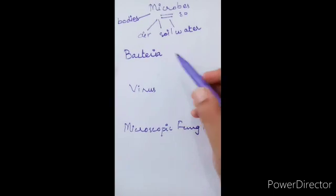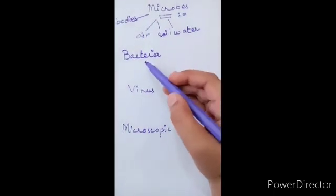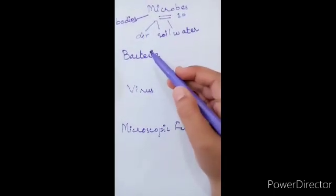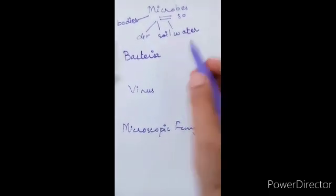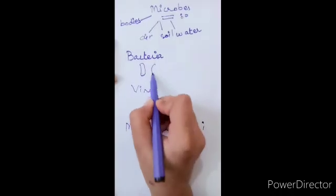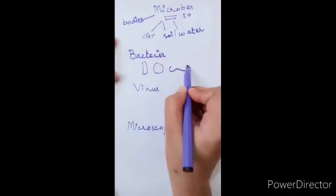Bacteria. Bacteria are very small living cells. They come in various shapes and sizes like rod shape, round shape, and spiral shape.